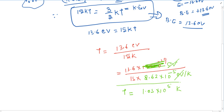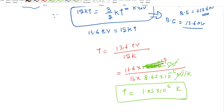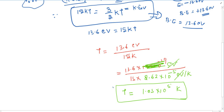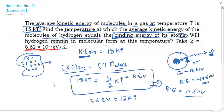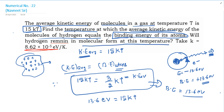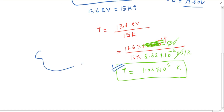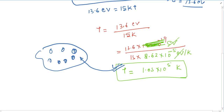10 to the power 5 Kelvin is a very high temperature, which is a high temperature. At this temperature, the hydrogen molecules — the gas has many molecules — so at this temperature, the hydrogen will be ionized and electrons will go out. So at this temperature, hydrogen cannot exist in molecular form.